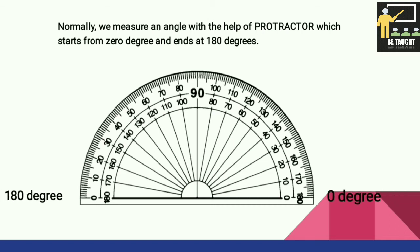Normally we measure an angle with the help of a protractor, which starts from zero degrees and ends at 180 degrees. This is the center point, and in geometrical terms this is also known as a degree.